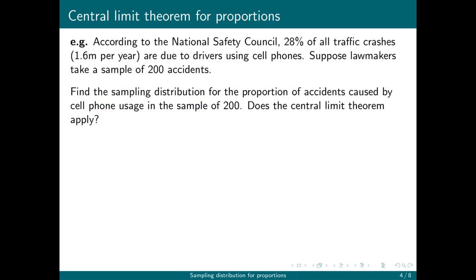Here's an example. According to the National Safety Council, 28% of all traffic crashes — that's 1.6 million traffic crashes per year — are due to drivers using cell phones. Suppose lawmakers take a sample of 200 accidents. We're going to find the sampling distribution for the proportion of accidents caused by cell phone usage in that sample of 200, and then decide whether or not the central limit theorem applies. In this example, P, the true proportion, is 0.28, and the sample size n is 200.